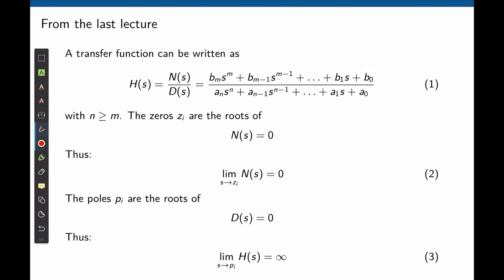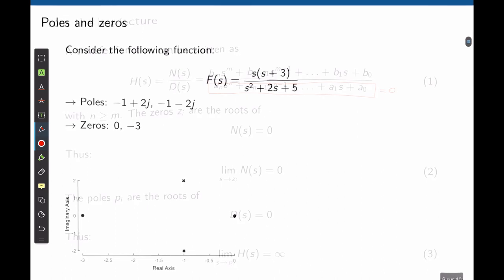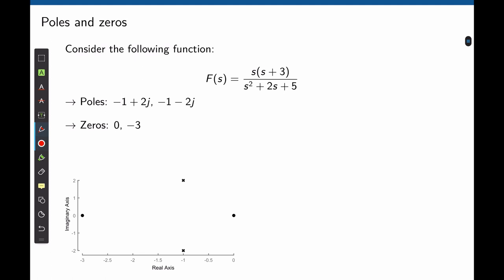At the zeros, the transfer function magnitude tends to zero. The poles are defined as the values of s that satisfy D(s) equals zero, where D(s) is the denominator of the transfer function. At the poles, the magnitude of the transfer function tends to infinity. Consider again the same transfer function studied in the last lecture. This transfer function has two zeros: s equals zero and s equals three, where the magnitude tends to zero, as seen in this three-dimensional plot.